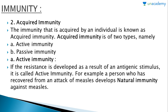The immunity acquired by an individual after birth is known as acquired immunity. It is of two types: active immunity and passive immunity. Active immunity is the resistance developed as a result of an antigenic stimulus — for example, a person who has recovered from measles develops natural immunity against measles. Active immunity is gained through memory cells in our body.